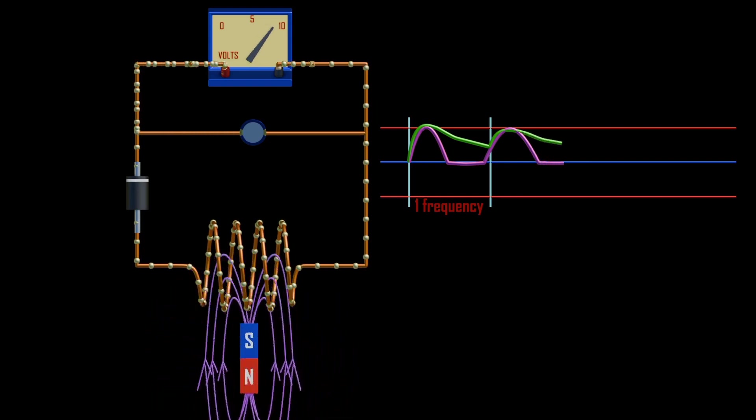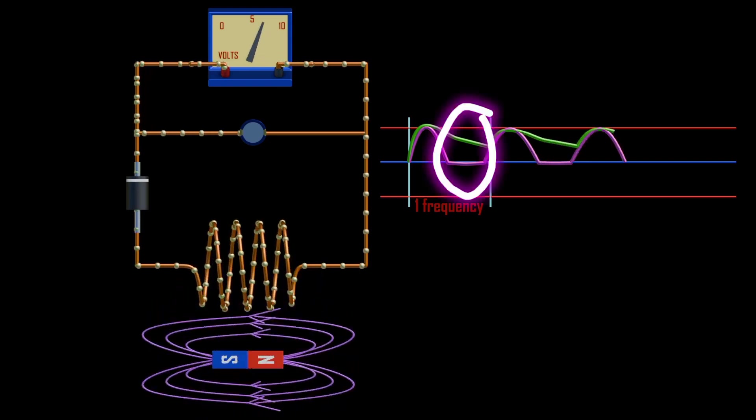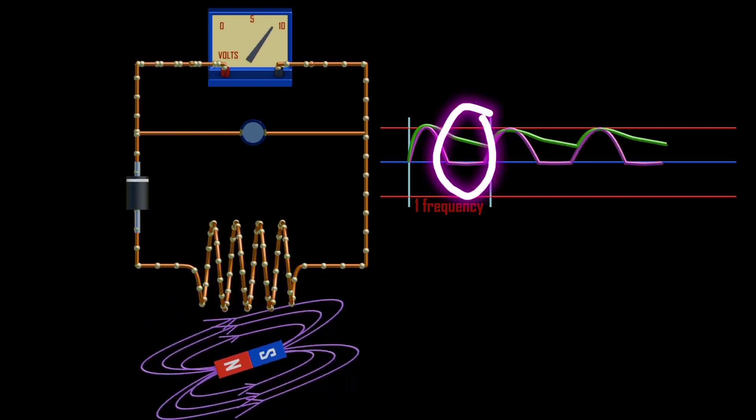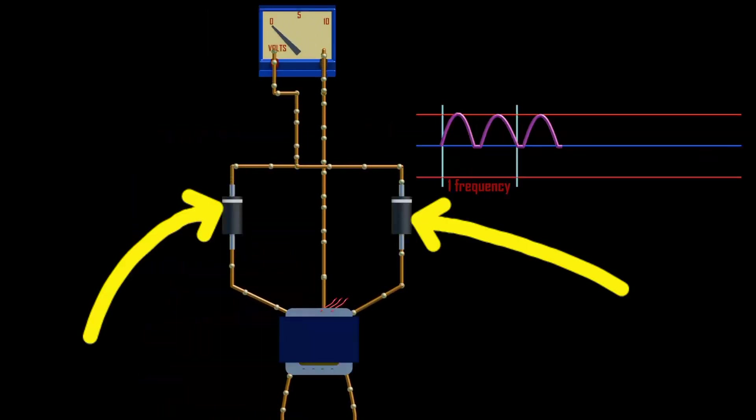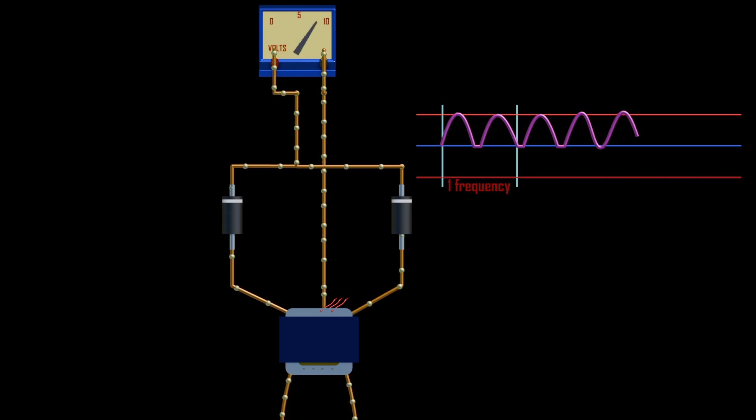But in this half-wave rectifier, there is a very large gap. Therefore, we can improve our circuit instead of having one diode. We can use two diodes to block and allow current flow. With the help of a center tap transformer, we can see that both positive half cycles are formed in one frequency.